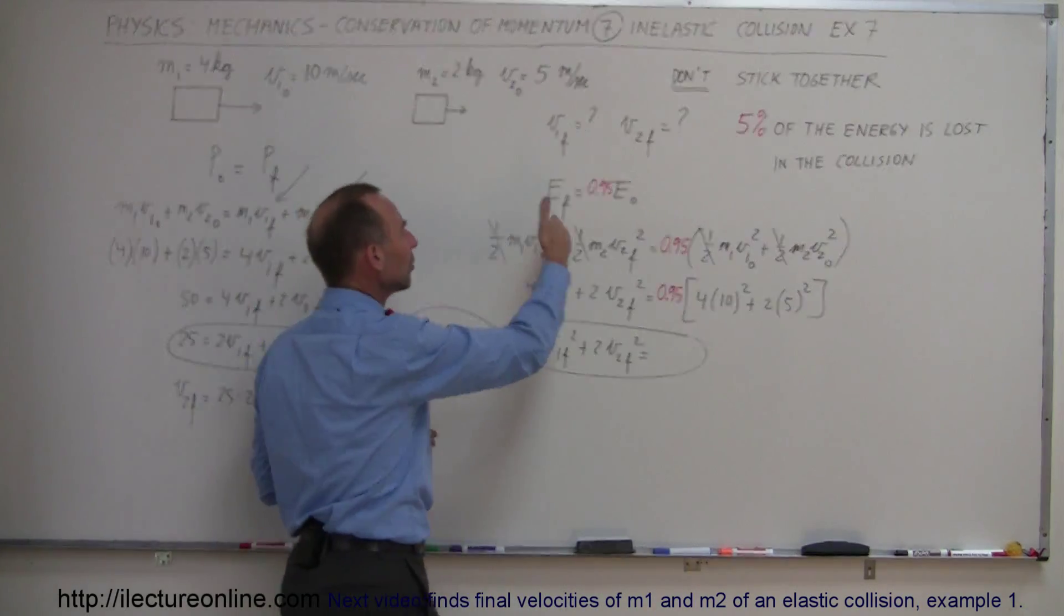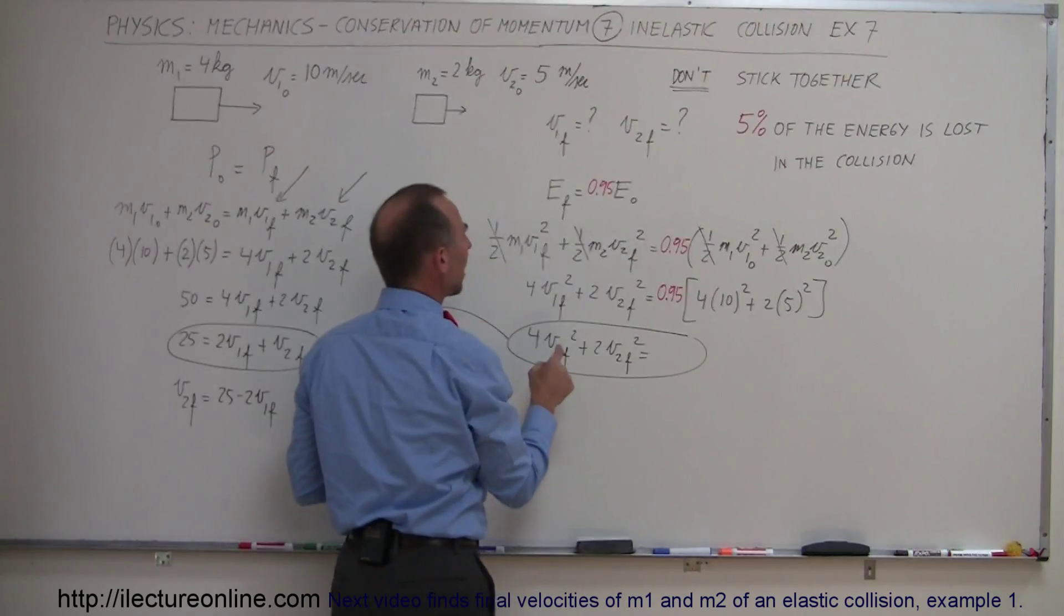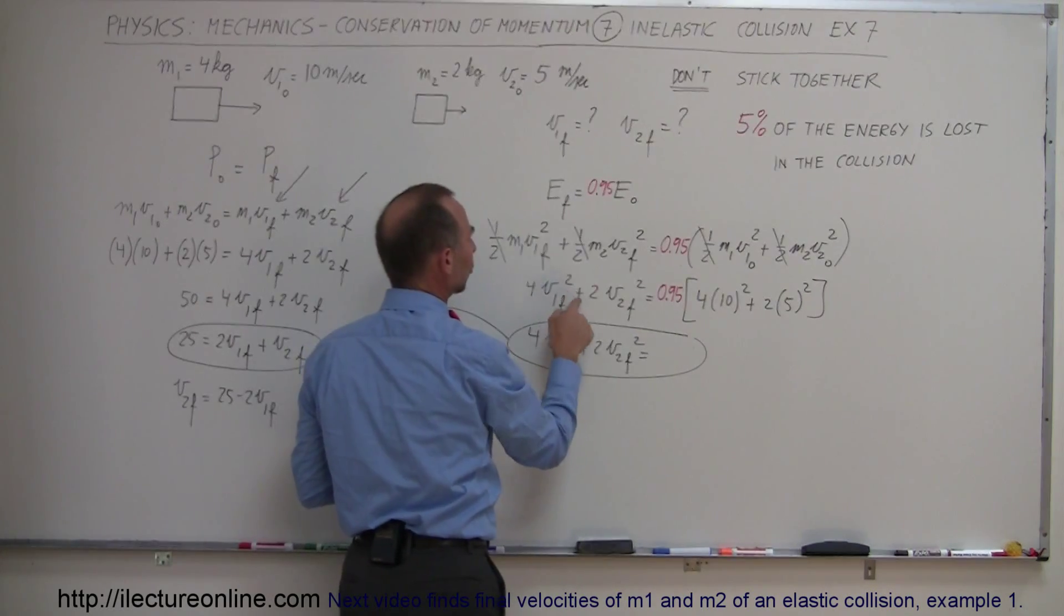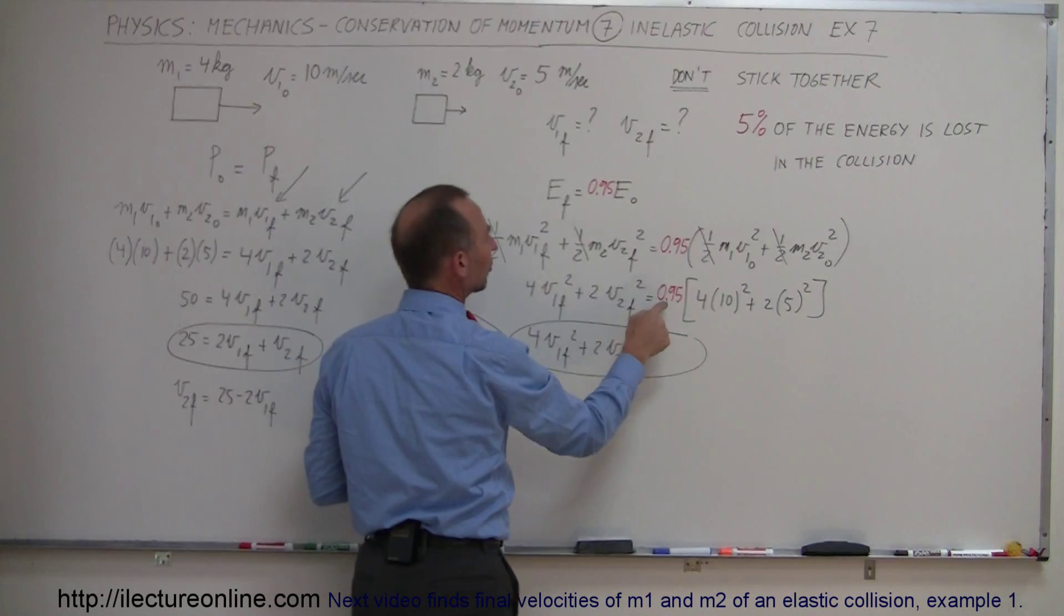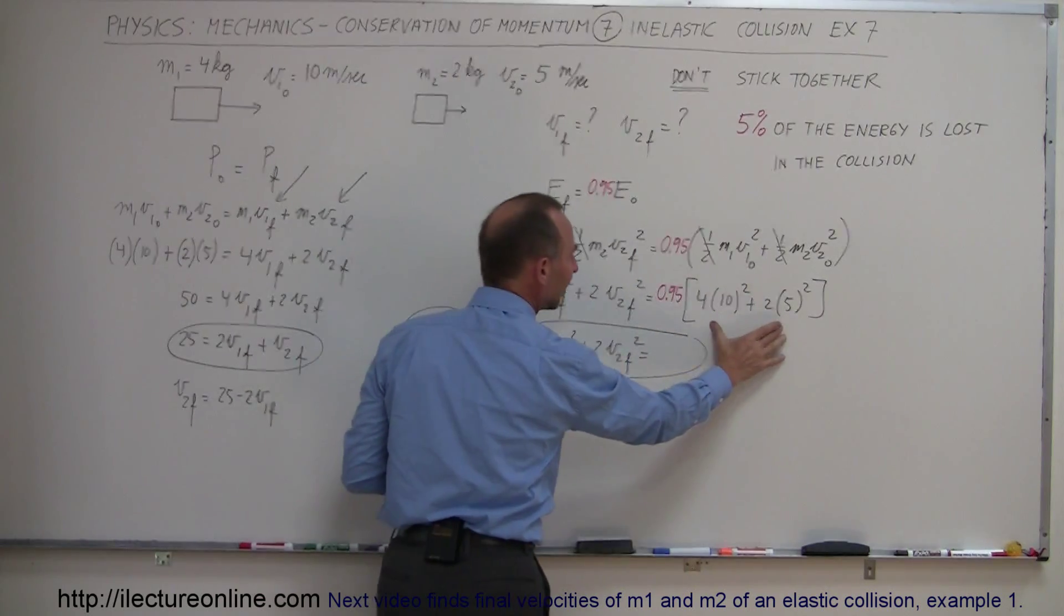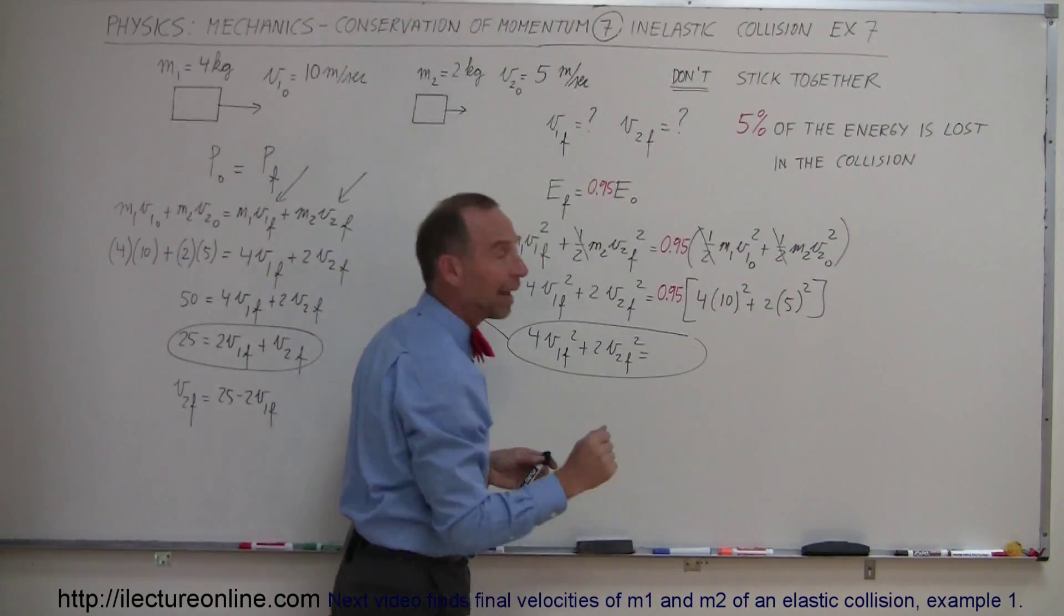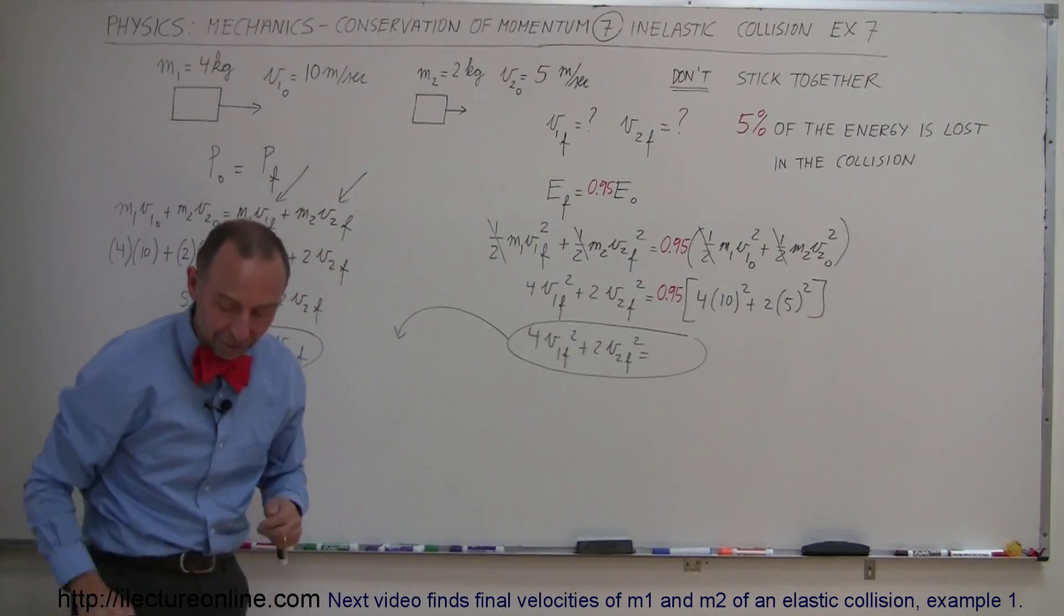Right away you can see you can get rid of the one-halves which means that we now have 4V1 final squared plus 2V2 final squared equals 95% of this and of course we know their velocities and their masses so we come up with that value.